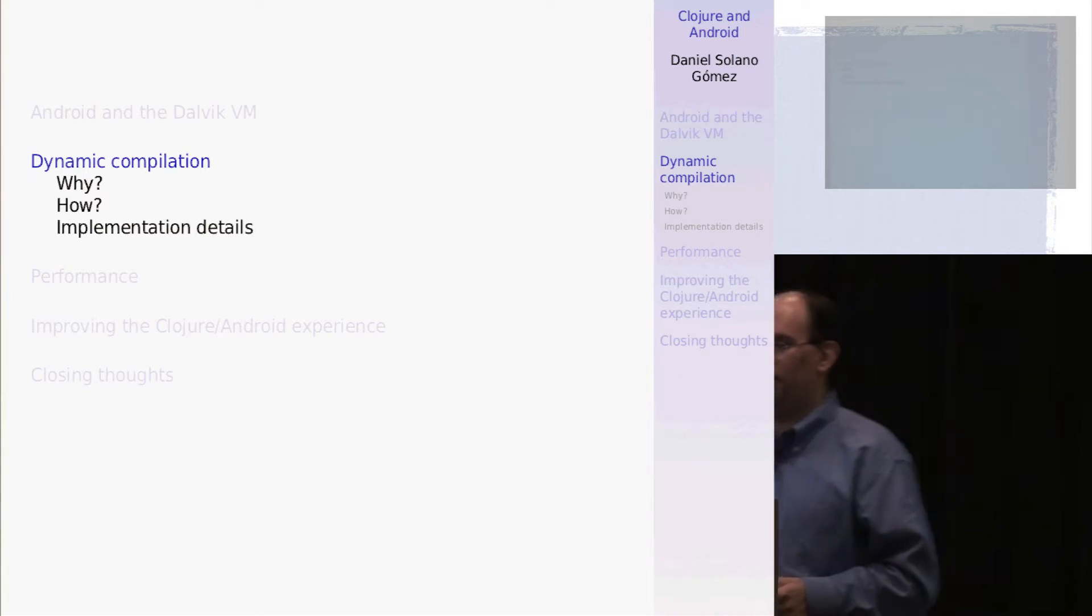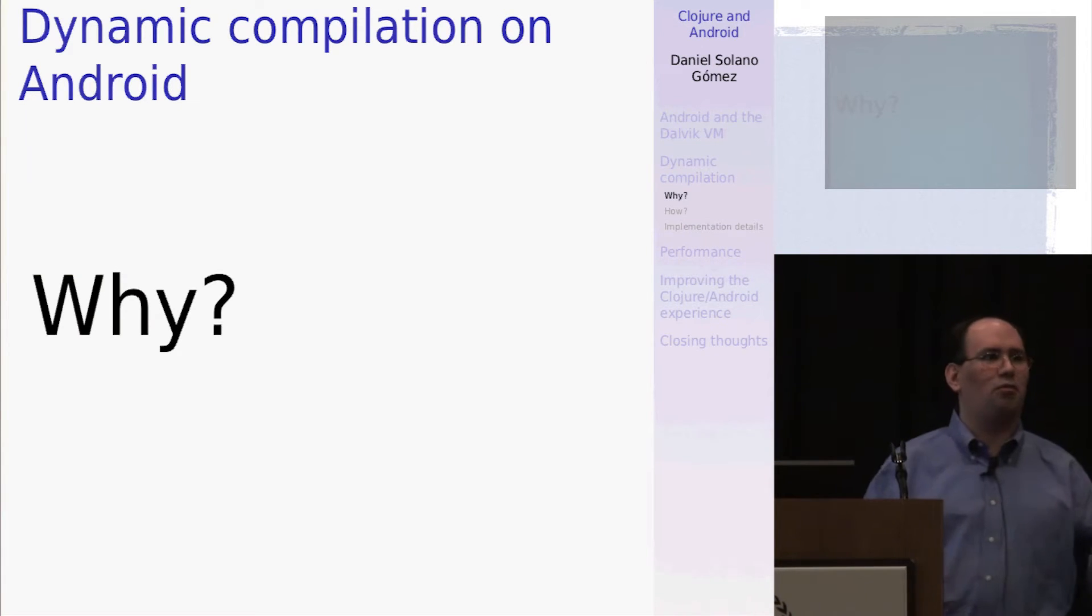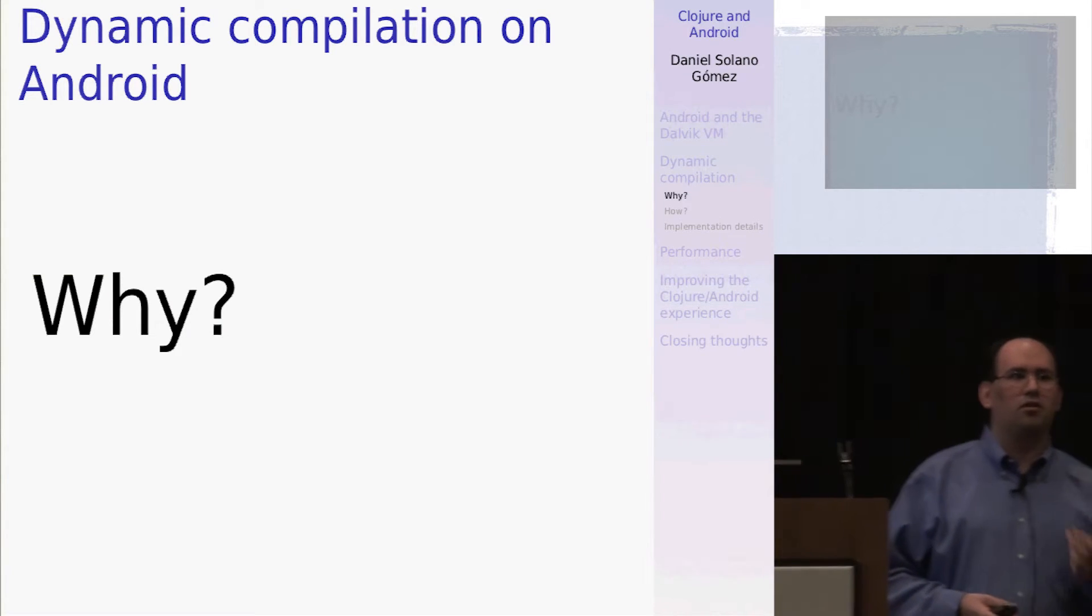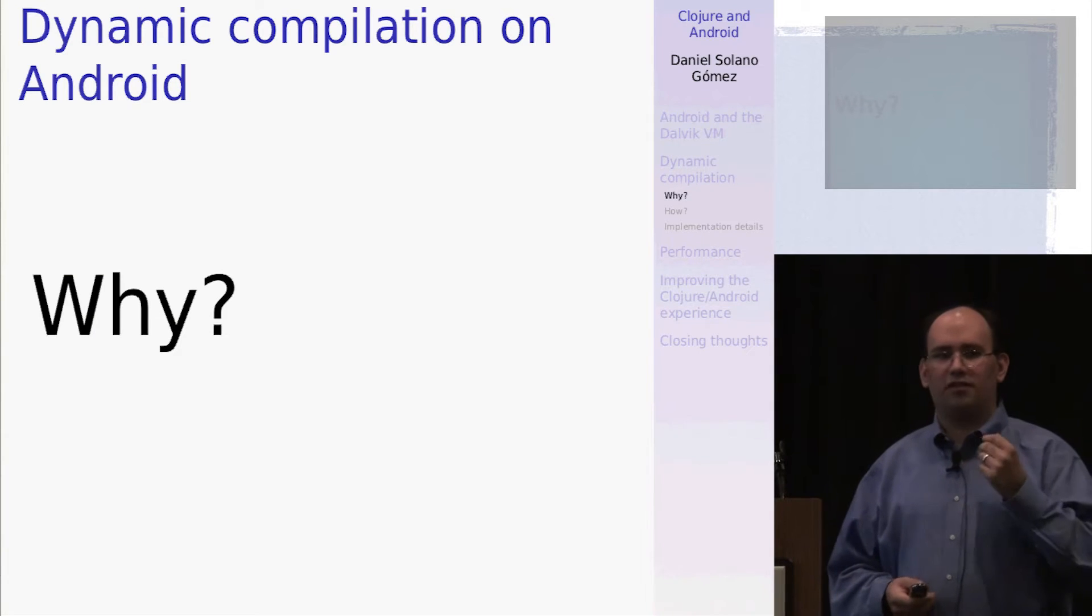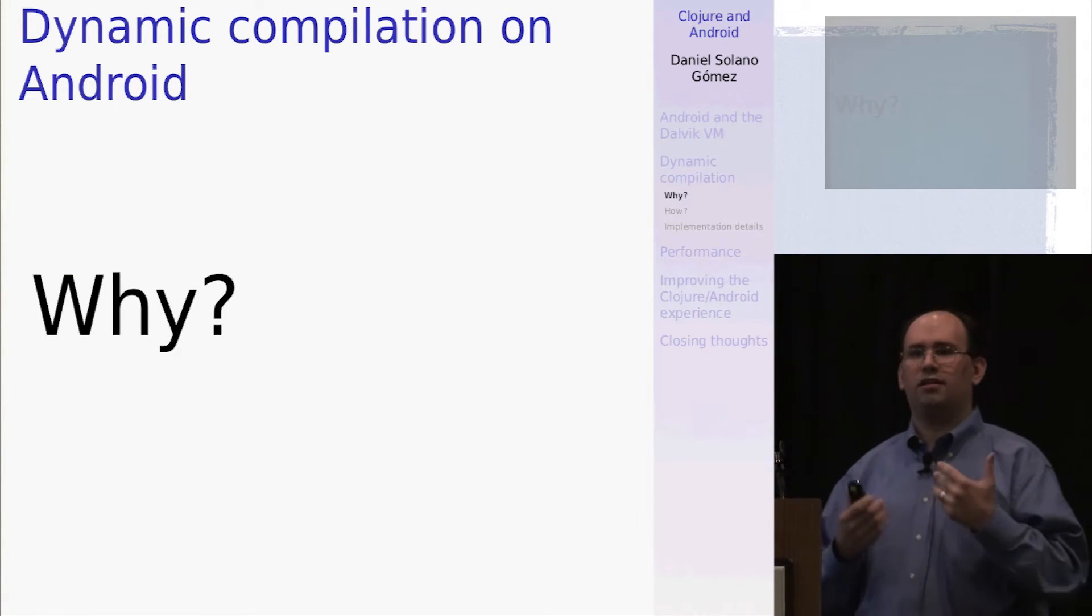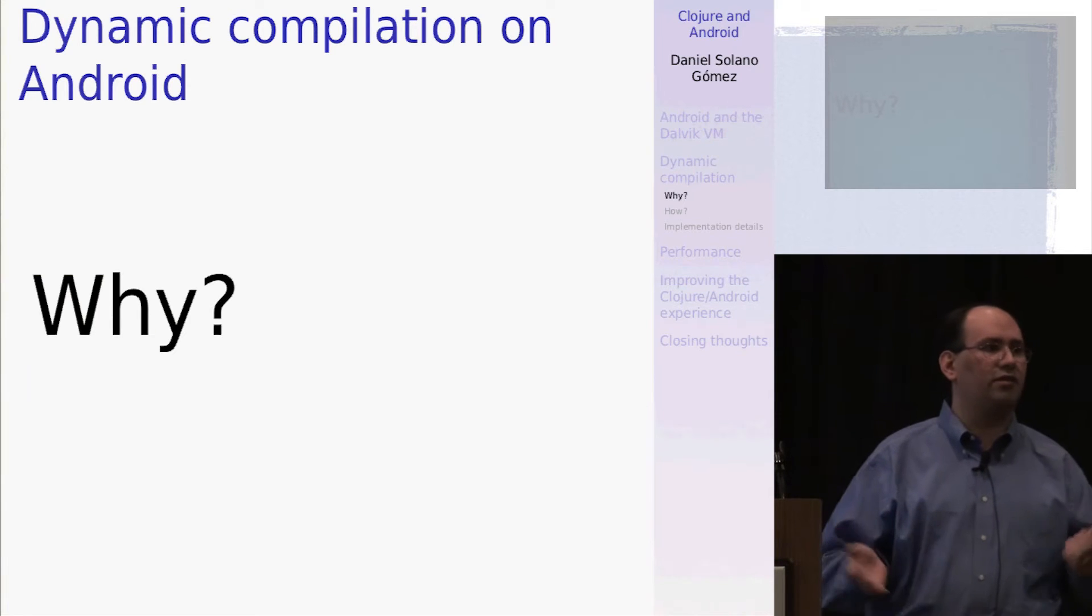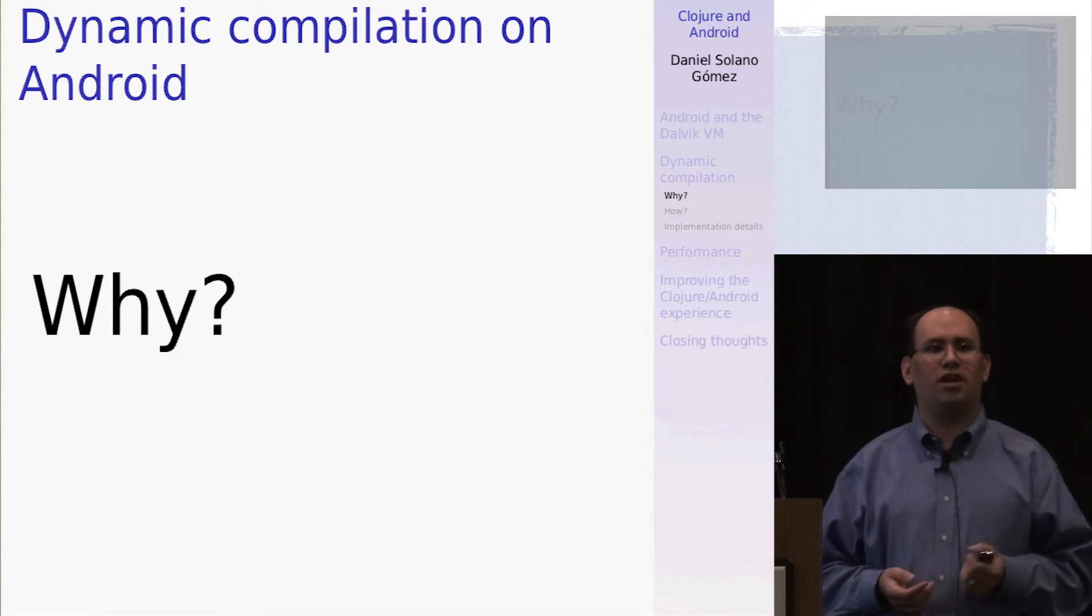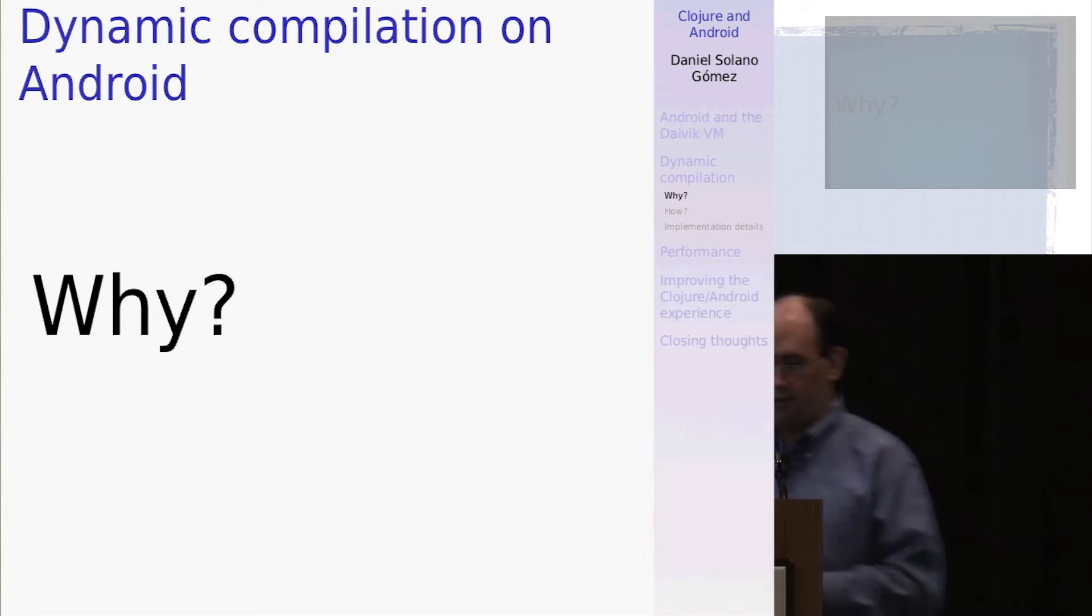So dynamic compilation. I think we probably all know here why we want to do it. One of the wonderful things about Clojure is dynamic, REPL-driven development. Typically, when you're doing Android development, you can spend up to a minute or more, depending on the size of your application, waiting for a new change to your code to get redeployed.